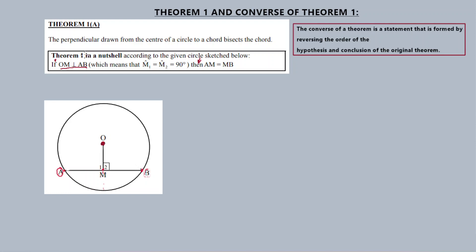This is the hypothesis. This is the conclusion. The converse reverses the conclusion and hypothesis. So instead of saying if OM is perpendicular to AB, we say if AM is equal to MB, then OM is perpendicular to AB.